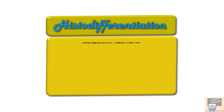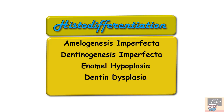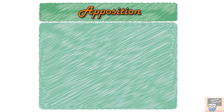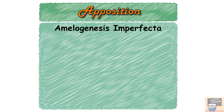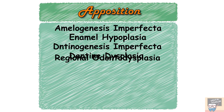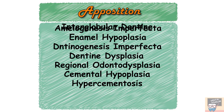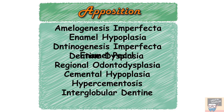A few examples of defects associated with histodifferentiation are amelogenesis imperfecta, dentinogenesis imperfecta, enamel hypoplasia, dentine dysplasia, and cemental hypoplasia. A few examples of defects associated with apposition include amelogenesis imperfecta, enamel hypoplasia, dentinogenesis imperfecta, dentine dysplasia, regional odontodysplasia, cemental hypoplasia, hypercementosis, interglobular dentine, and enamel pearl.